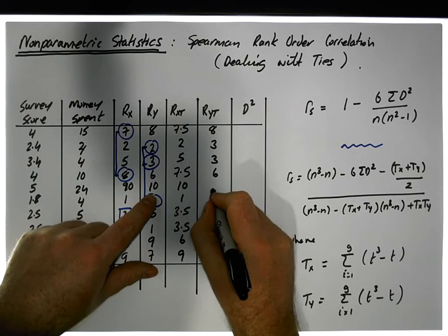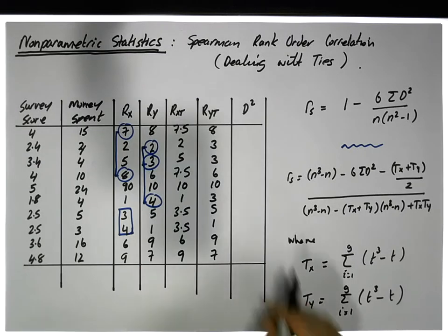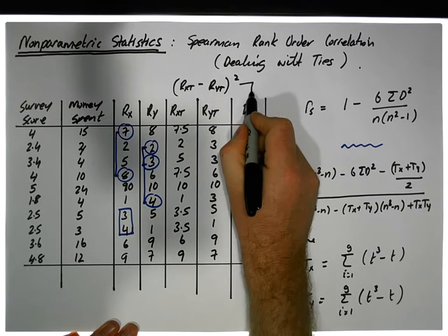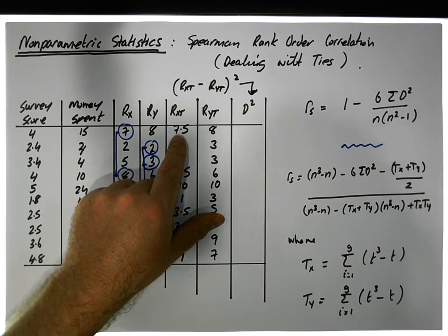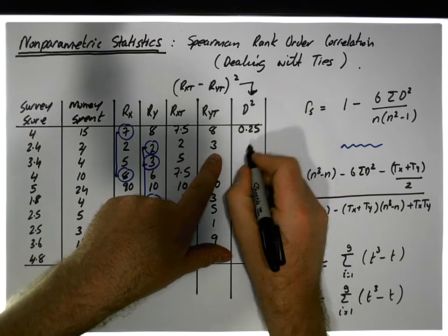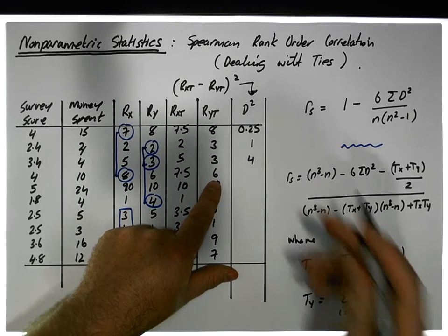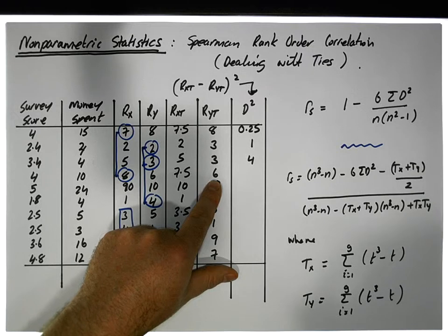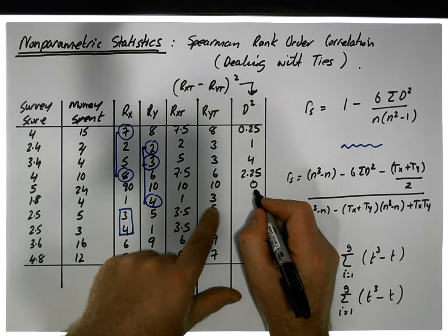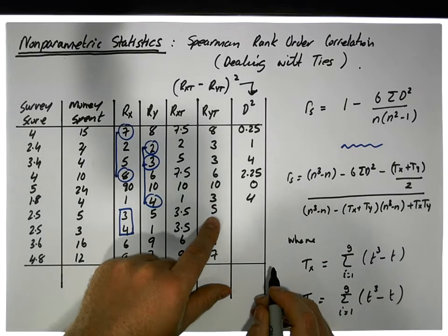Everything else remains the same: 8, 6, 10, 5, 1, 9, and 7. Now we need to calculate the difference between the X rank and Y rank (rx minus ry) and square them. So: 7.5 minus 8 gives us −0.5, squared gives us 0.25. Then 2 minus 3 gives us −1, squared gives us 1. Then 5 minus 3 gives us 2, squared gives us 4. Then 7.5 minus 6 gives us 1.5, squared gives us 2.25. And 10 minus 10 is 0, squared is 0. Then 1 minus 3 is −2, squared gives us 4.